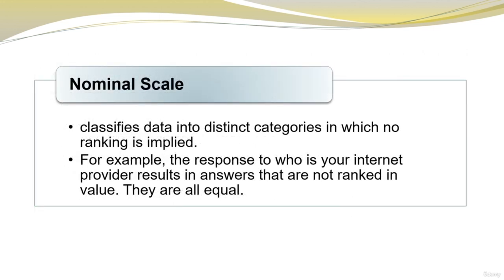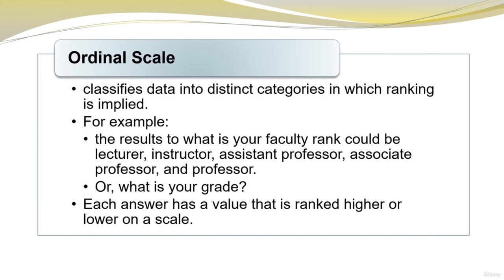Nominal scale classifies data into distinct categories in which no ranking is implied — for example, the response to 'who is your internet provider' results in answers that are not ranked; they are all equal. Ordinal scale classifies data into distinct categories in which ranking is implied. For example, faculty rank could be lecturer, instructor, assistant professor, associate professor, and professor — each answer has a value that is ranked higher or lower on a scale.